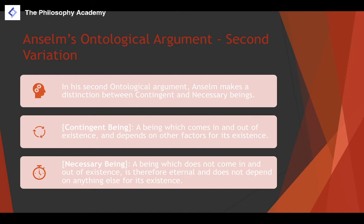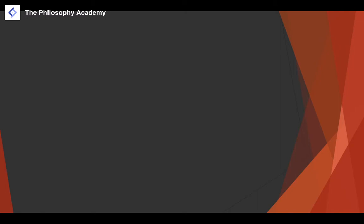So humans, animals, insects, and creatures are all contingent beings — they exist for a period of time and depend on other factors. A necessary being is the complete opposite: it does not come in and out of existence, is therefore eternal, and does not depend on anything else — it depends only on itself.